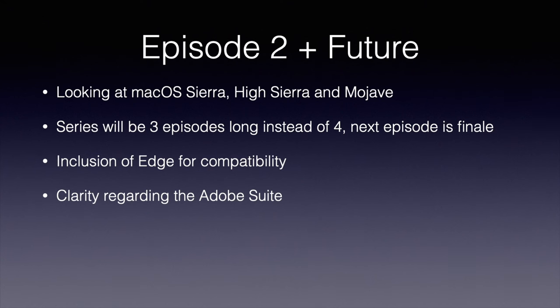Hi guys, it's the Macintosh Guide and welcome to episode two of the macOS Upgrade Marathon. This episode we'll be looking at the macOS Sierra, High Sierra, and Mojave updates for the Mac Pro 6,1. Also, in the first episode I mentioned this was going to be a four-part series — it's actually going to be a three-part series. I've decided to do three operating systems per video, so the next episode will be the series finale.